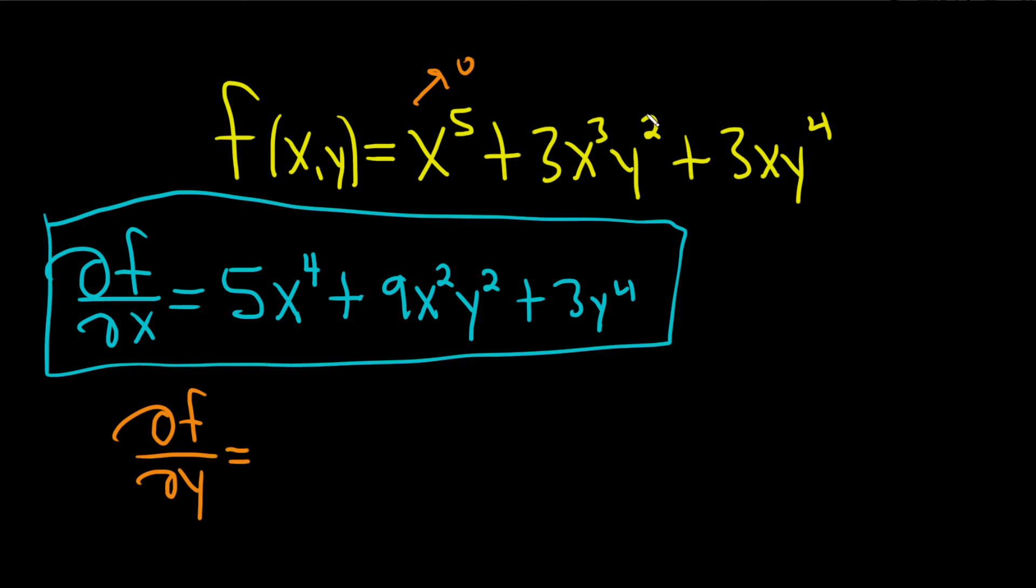This is a constant. So we'll differentiate the y. 2 times 3 is 6. Then we have x cubed. It hangs out. And then y to the first power.